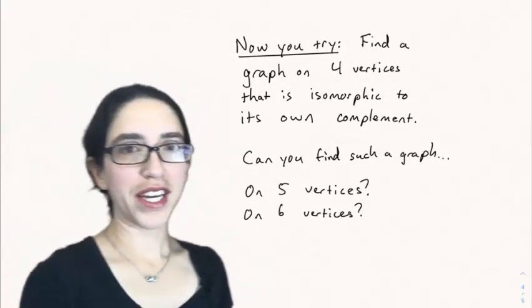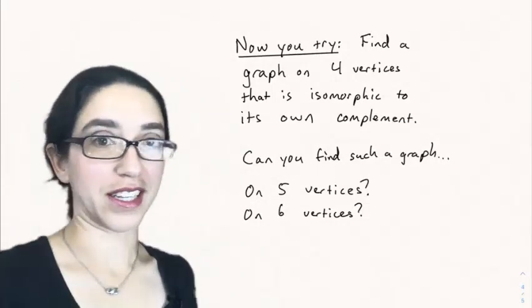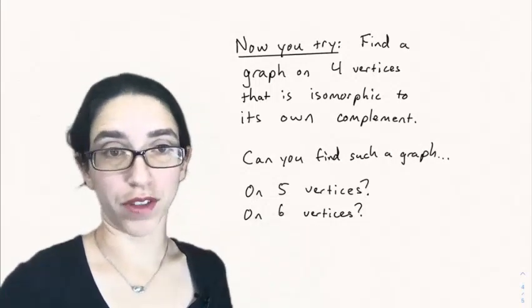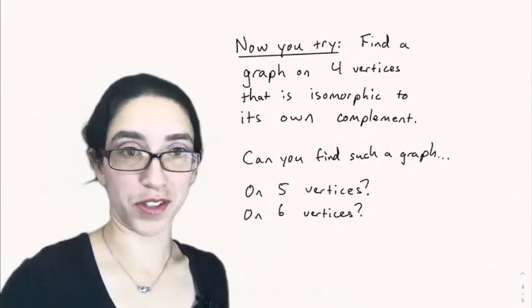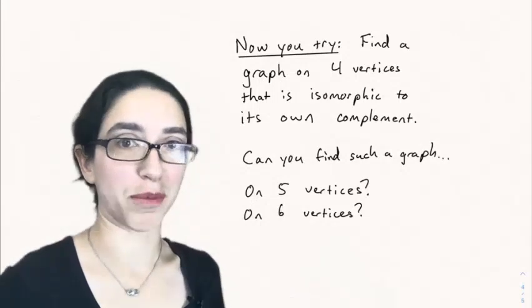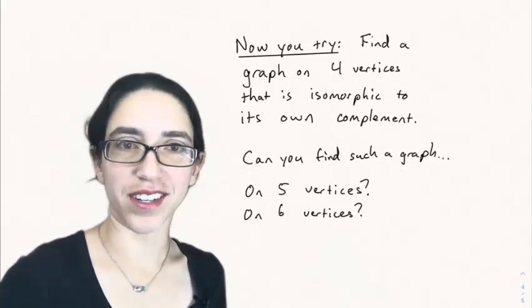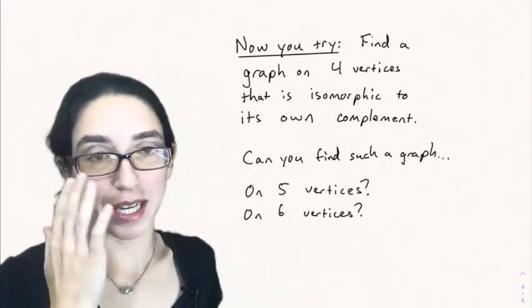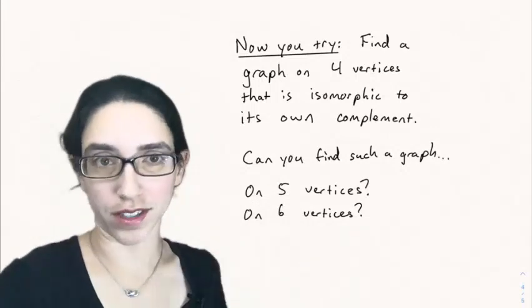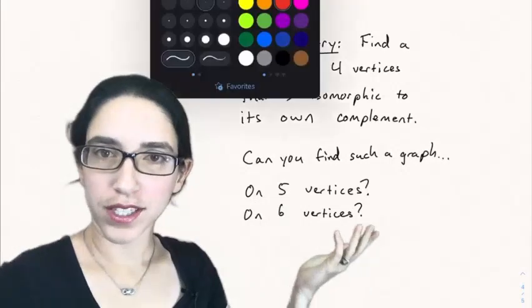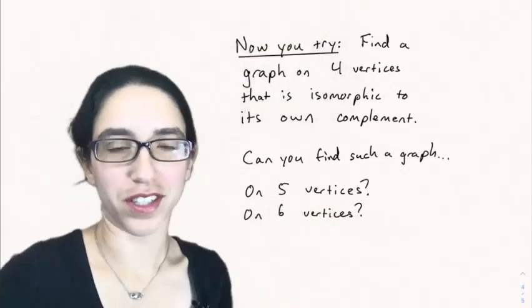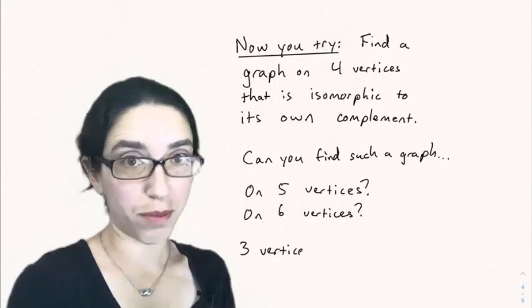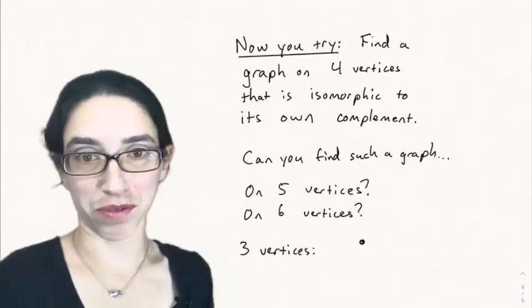So now you try. Find a graph on four vertices that is isomorphic to its own complement. So in the graph we drew above, the complement graph had way more edges than the original graph, so it certainly couldn't be the same graph. But sometimes it can be done. Sometimes you can have a graph that you take its complement and you really get the same graph up to redrawing it in some way. And can you find such a graph on five vertices or six vertices? And it isn't always possible. In fact, on three vertices, it's not possible to find a graph that's isomorphic to its own complement. Let's see how this works.